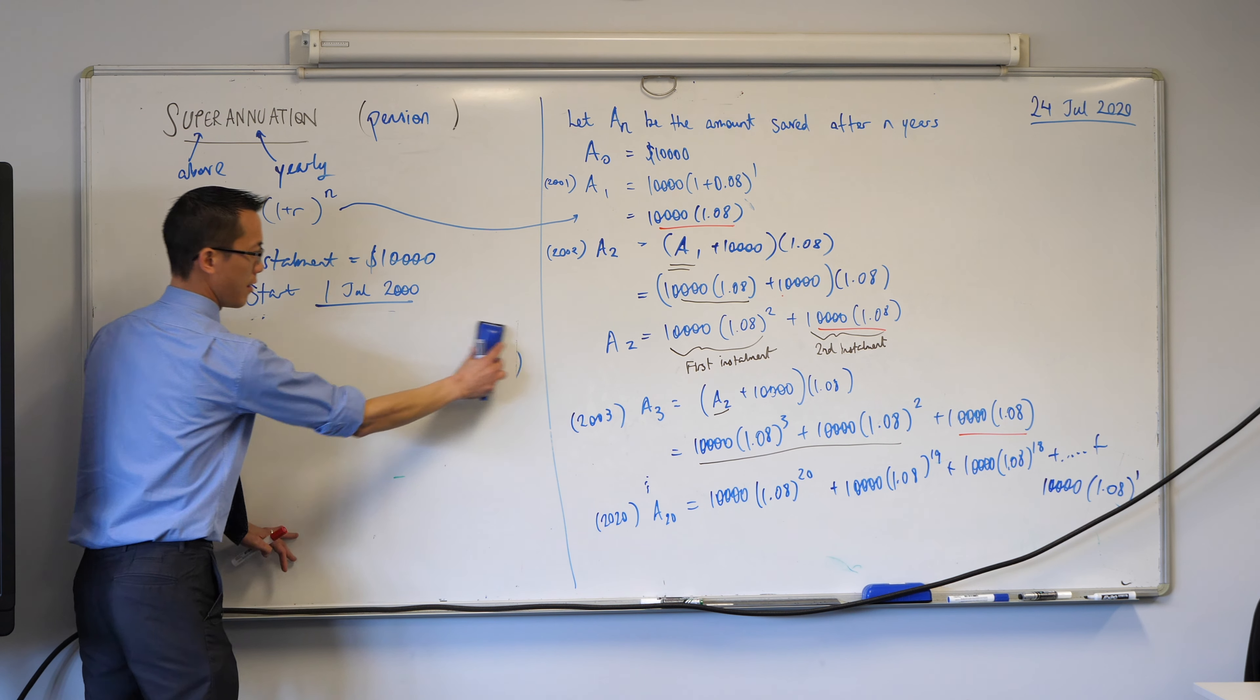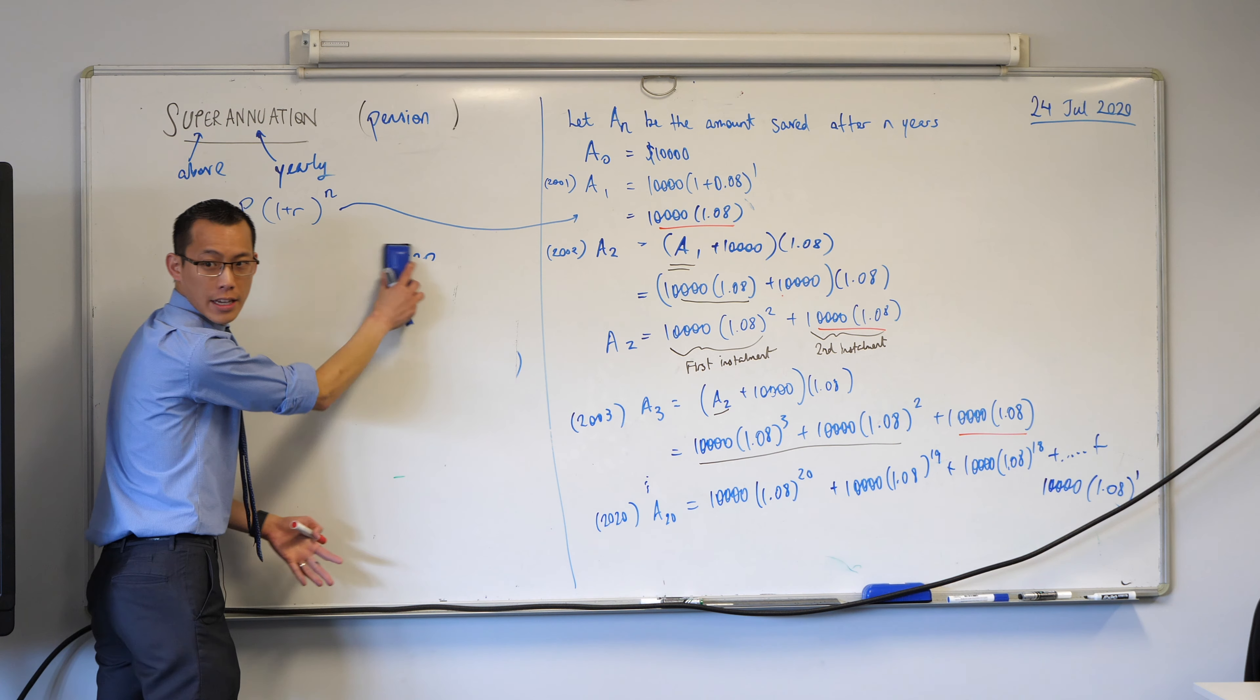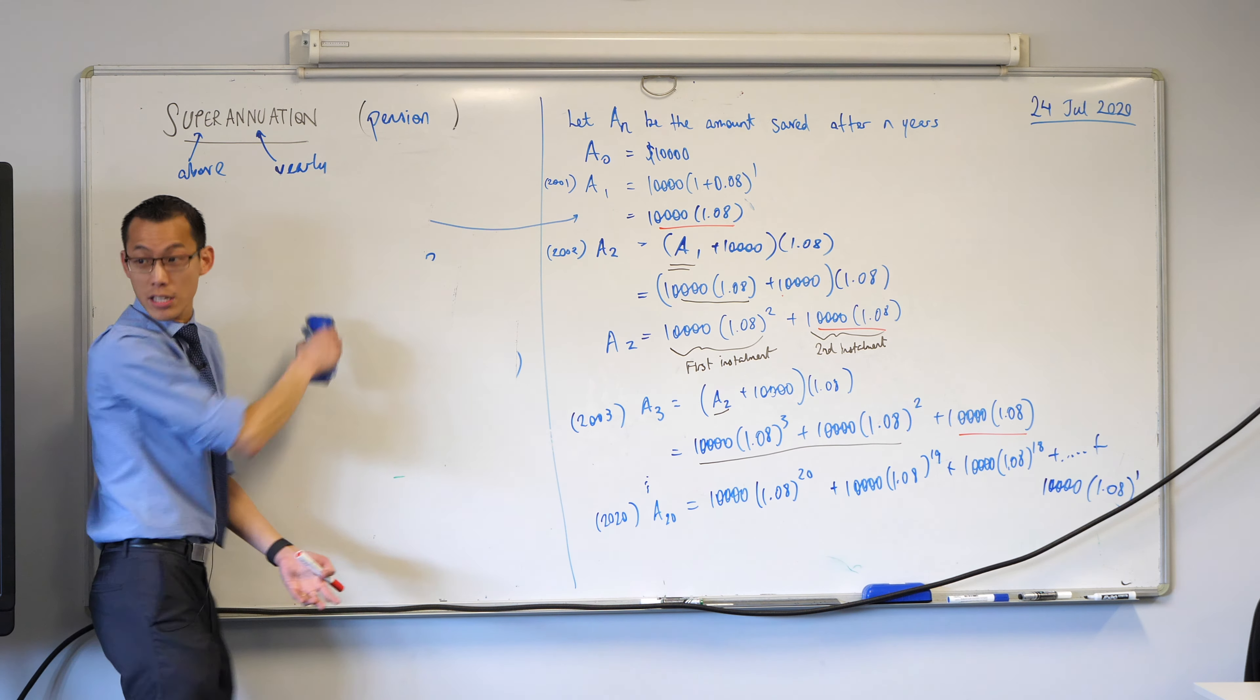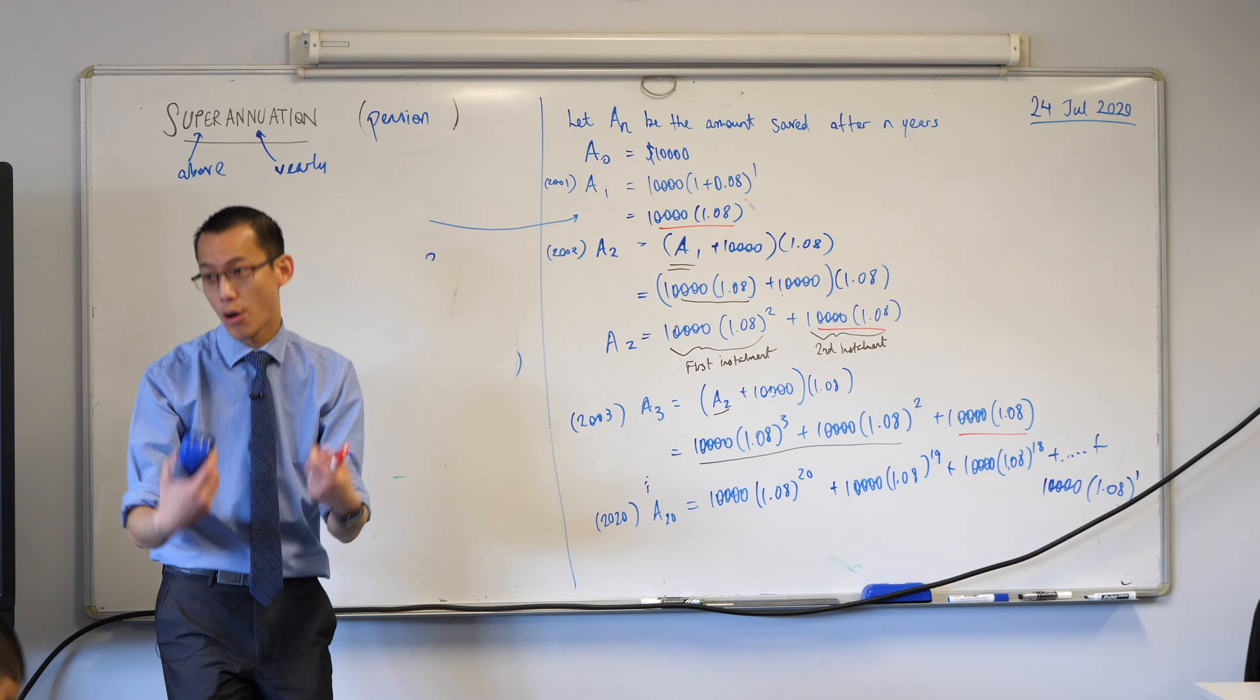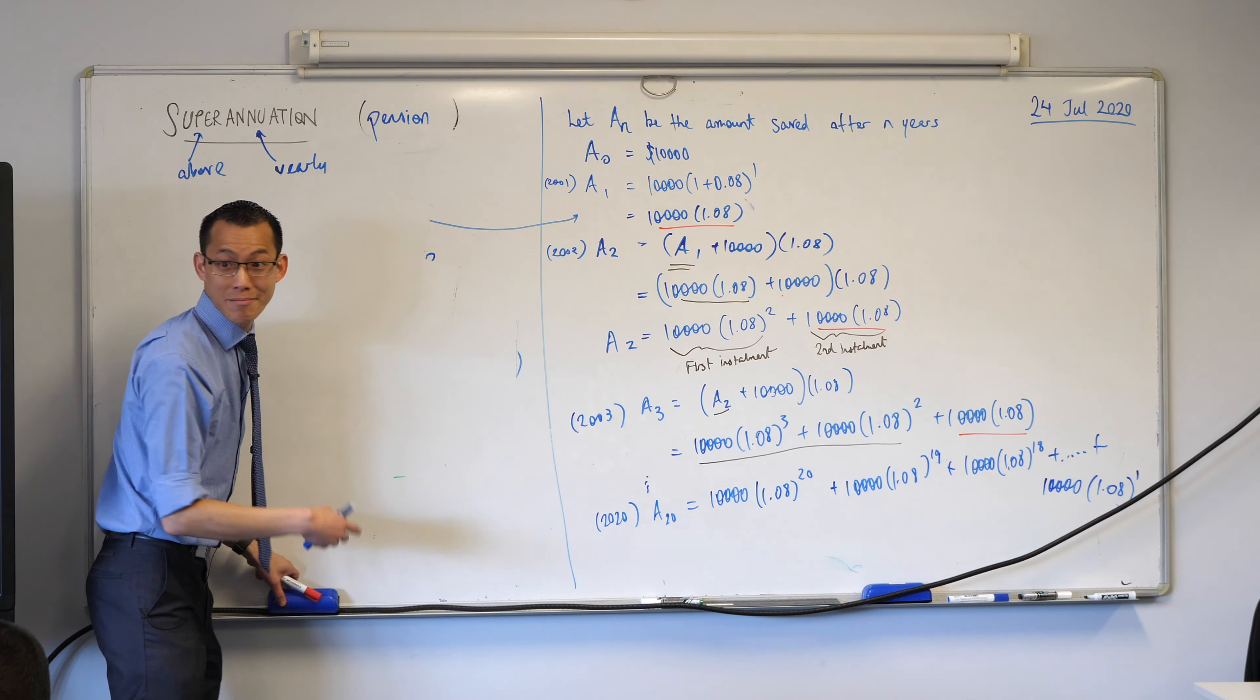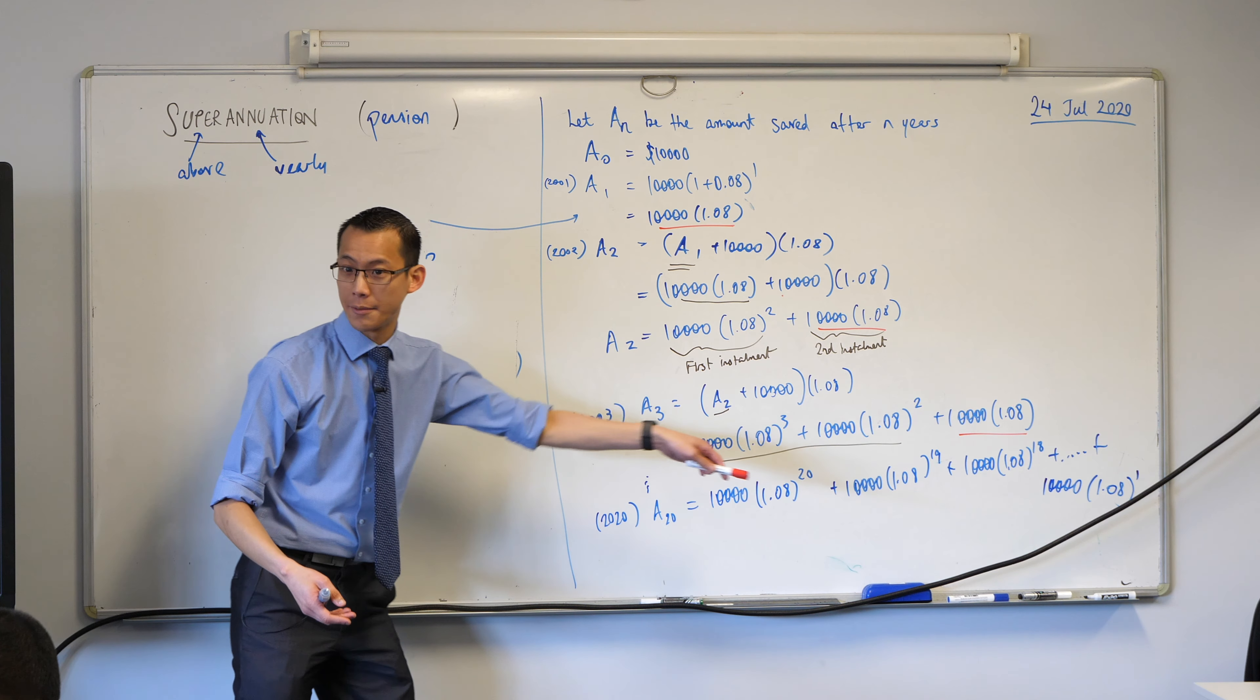Because what is this thing, A20? It's a sum of what kind of thing? It's a series of what form? It's a geometric series because it's the same ratio being applied over and over again. What is the ratio by the way? 1.08, you can see it happening over and over again.